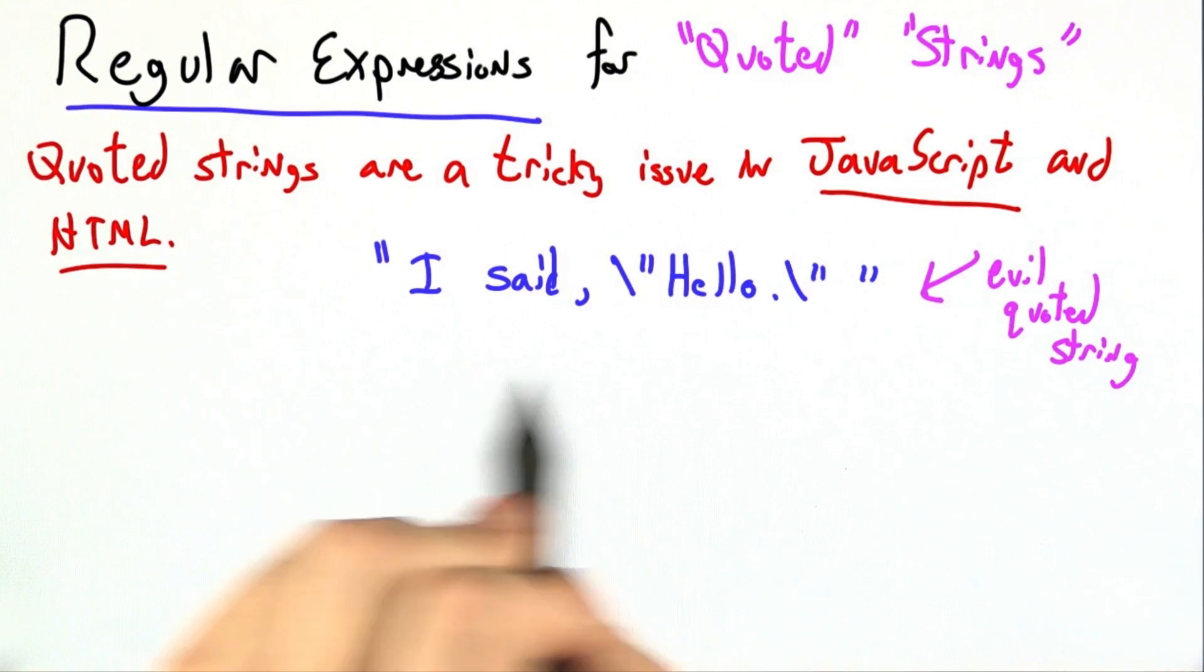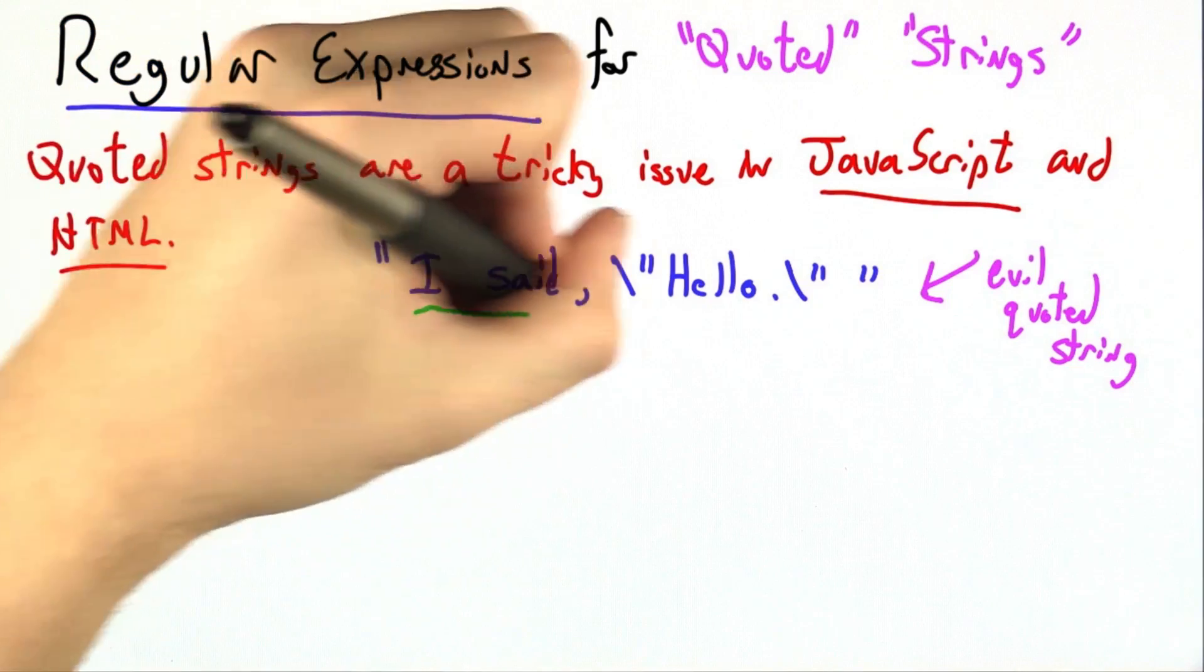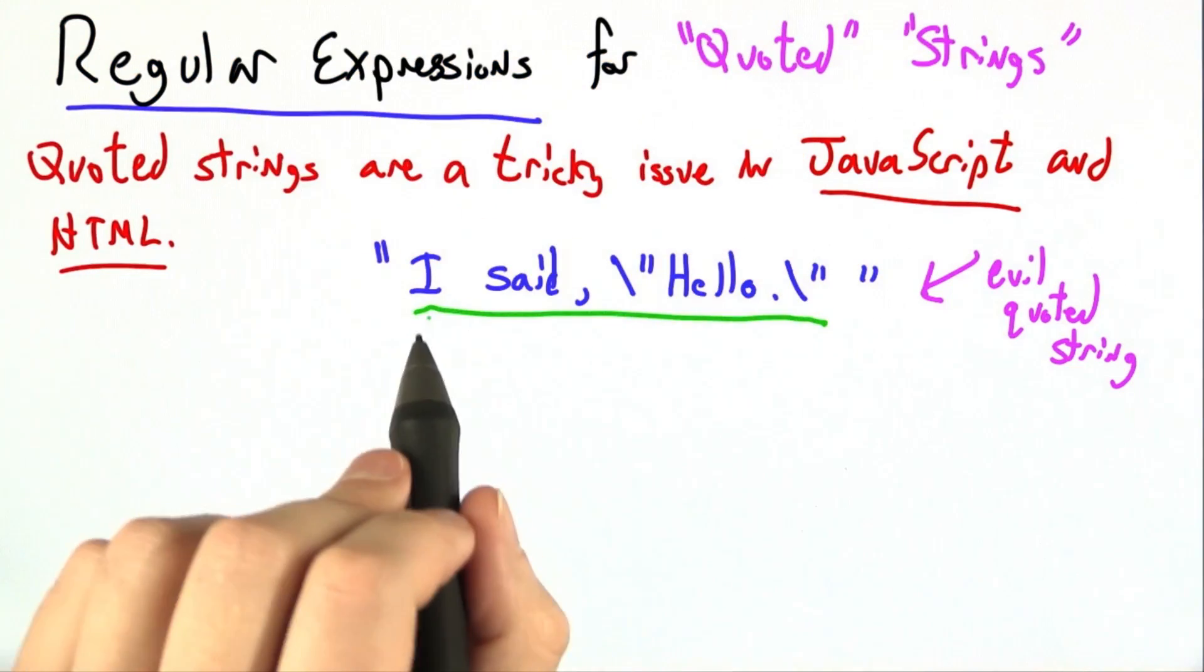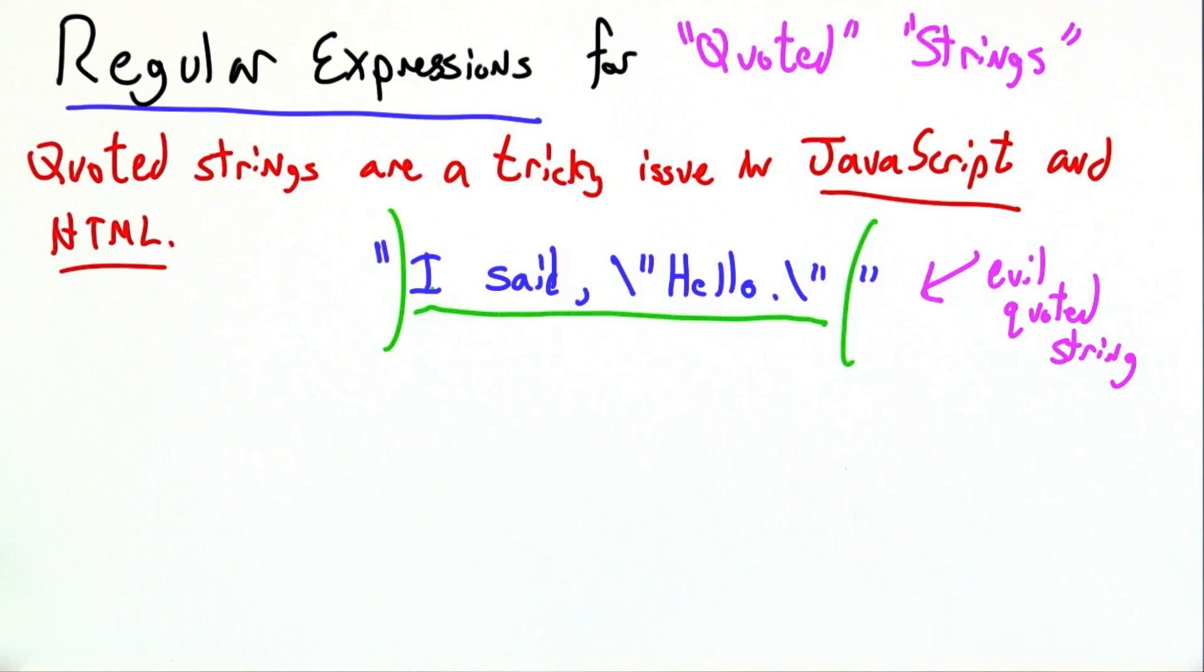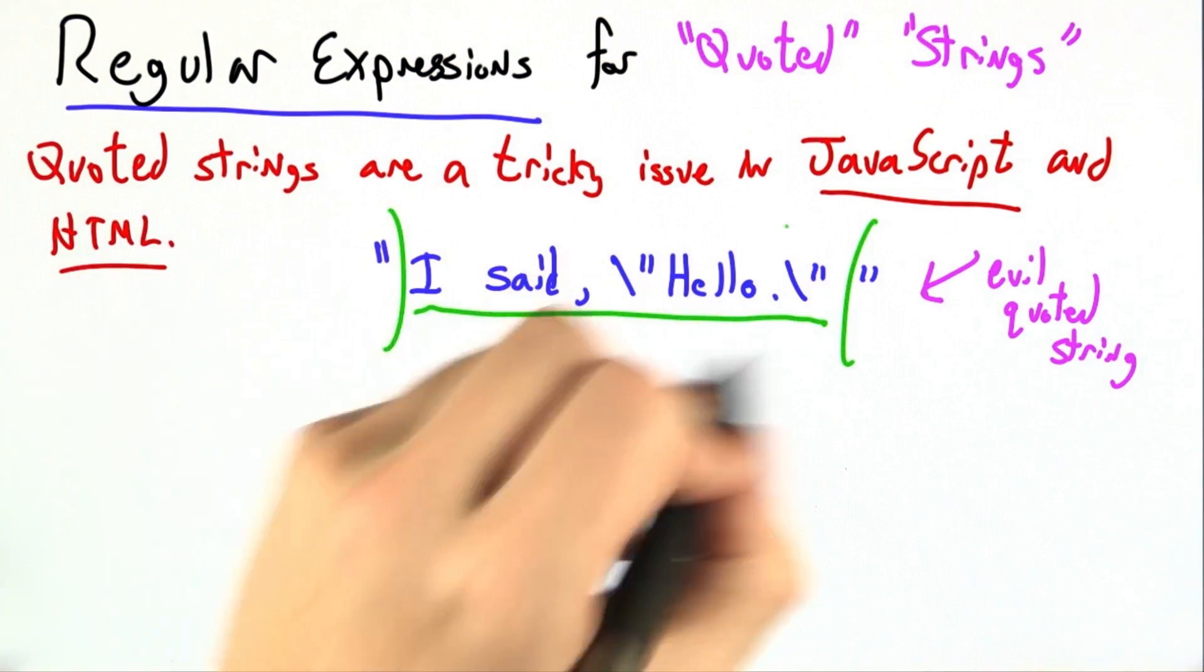Here I've drawn an evil quoted string that contains a bunch of double quotes. We really want to get to just the heart of it, just the contents, and peel off these two double quotes at the end. They're like the rind. I want to get to the core.